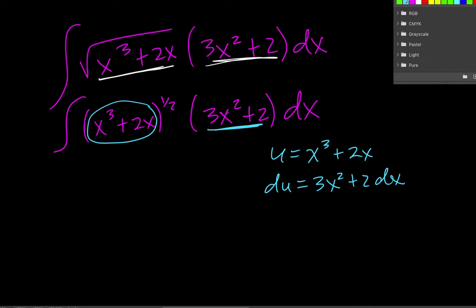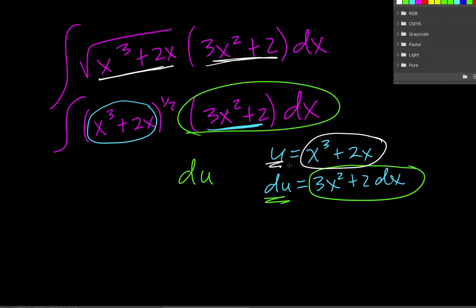So we need to find this and replace it with du. So all of that becomes du and then we need to find all of this and replace it with u. And then we still have that.